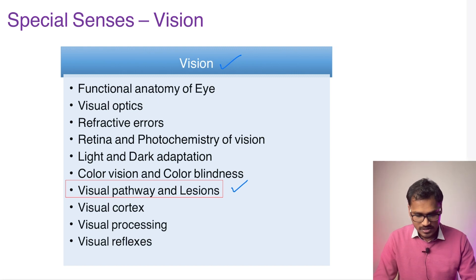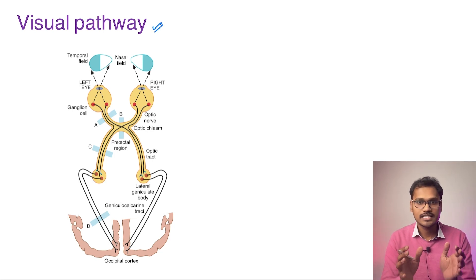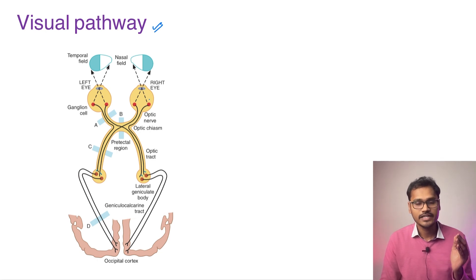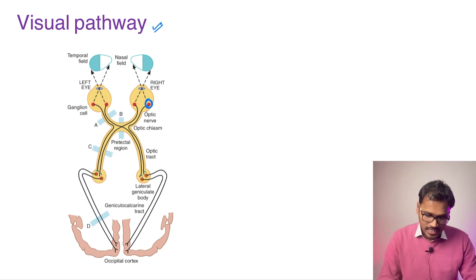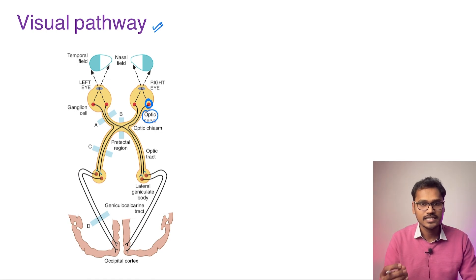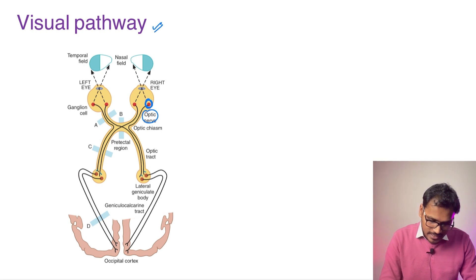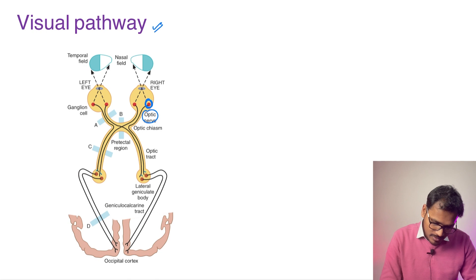The visual pathway starts at the level of photoreceptors. From the photoreceptors they activate the bipolar cells, and finally the ganglion cells. Once the ganglion cells are activated, the impulse is carried via the optic nerve. In the optic nerve, the fibers of the nasal retina and the temporal retina form two different sets of fibers.